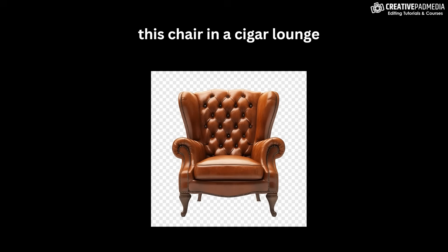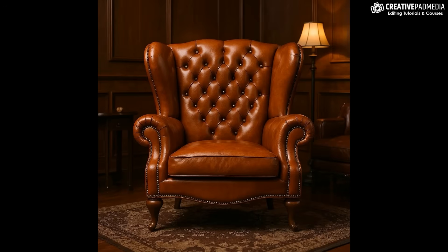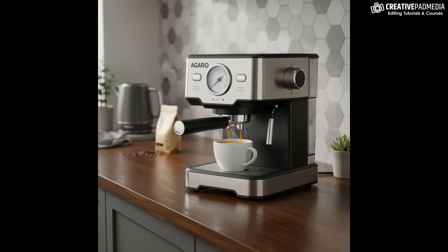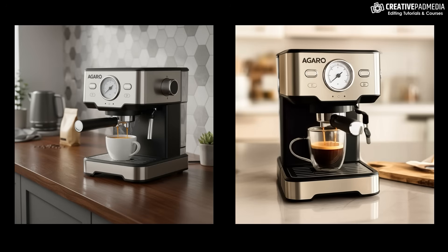We had a simple image of a leather couch and I typed: this chair in a cigar lounge, just to test the context. This is the result Nano Banana gave — absolutely fantastic. We've got the cigar, the whiskey, the colors — everything you would expect inside a cigar lounge — and of course it kept the couch very, very consistent. Flux Context maintained the couch's consistency but where is the context? It didn't really look like a cigar lounge at all. Very similar was the next example: this coffee machine is kept in the kitchen, a cup of coffee is being made using it. Nano Banana's result was fantastic — look at those beans behind and that bean pouch. Flux Context wasn't bad but it just didn't add those extra things, and the image quality wasn't as great by comparison.